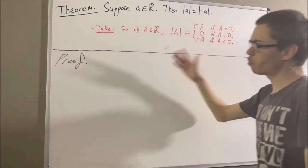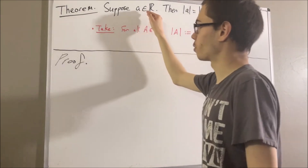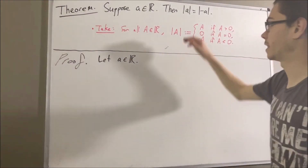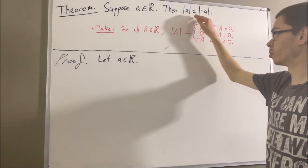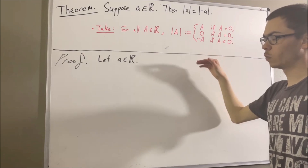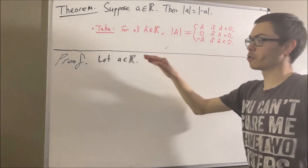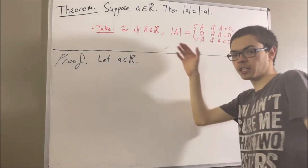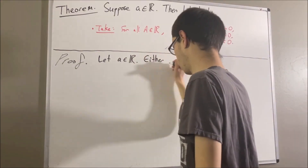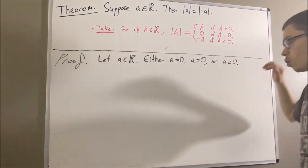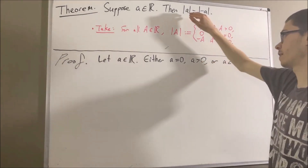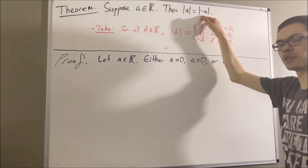To start out our proof, let's give ourselves an arbitrary real number A. Our whole goal is to prove that the absolute value of A is equal to the absolute value of negative A. To do that, we consider three cases: either A is equal to zero, A is greater than zero, or A is less than zero. We're going to show that in all three cases, the absolute value of A is equal to the absolute value of negative A.